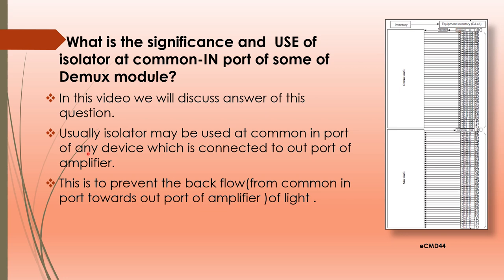The isolator may be used at the common input of any device connected to the output of the amplifier. When the common input is connected to the output port of the amplifier, the isolator is used there. The importance of the isolator is that it prevents the backflow of light — meaning light should not flow from the common input back towards the output port of the amplifier.